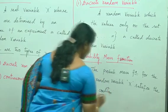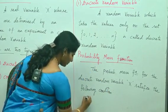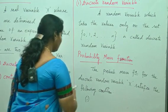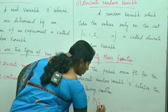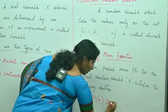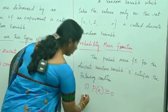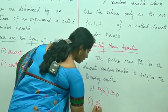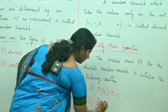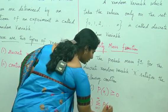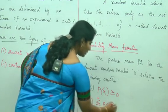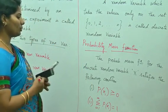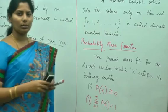Condition 1: p(xi) should be greater than or equal to 0. Condition 2: the summation from i equals 1 to infinity of p(xi) equals 1. The second condition is very important — we are going to use it to solve the problems.